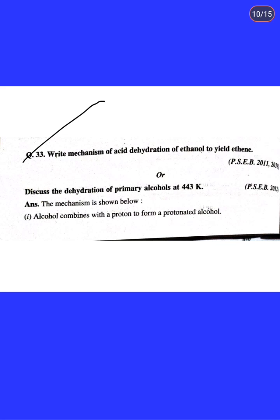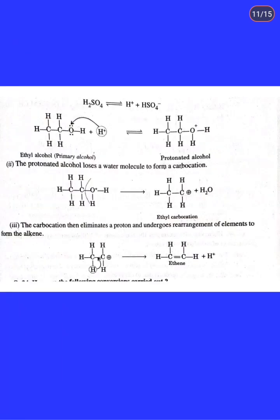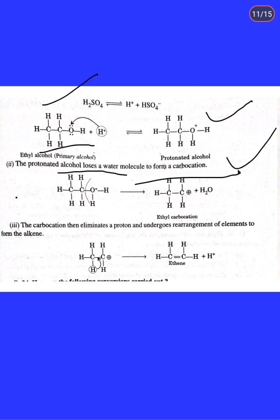Next: the mechanism of acid-catalyzed dehydration of ethanol. Step 1: alcohol combines with a proton to form a protonated alcohol. Step 2: the protonated alcohol forms a carbocation intermediate. Step 3: elimination of a proton and rearrangement gives the alkene product, completing the dehydration.